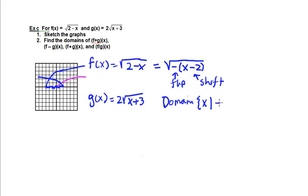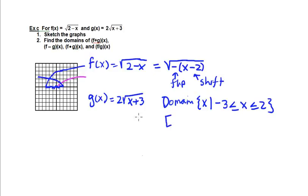So this goes from negative 3 less than or equal to x less than or equal to positive 2. Another way to write this is in interval notation — starting at the lower endpoint negative 3 and going up to positive 2, giving the interval from negative 3 to positive 2.